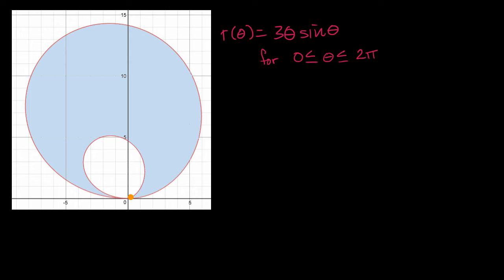And just to make sure we understand what's going on, this first loop gets traced out when theta goes between zero and pi. So zero is less than or equal to theta is less than or equal to pi. When theta is zero, this whole thing is zero. But then as theta increases, r increases as well. But then as theta goes back to approaching pi, remember sine of pi is zero, so then this thing will approach zero again.